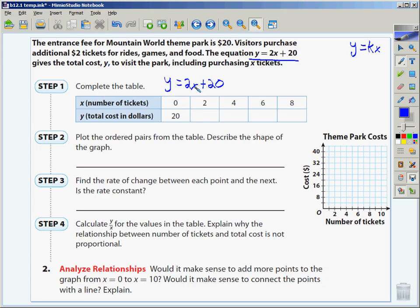So the first thing we're going to do is we're going to complete the table, and they did zero for us. They plugged zero in, they got 20. If I plug 2 in, 2 times 2 is 4, plus 20 is 24. 4 times 2 is 8, plus 20 is 28. 6 times 2? 12. Plus 20? 32. 8 times 2? 16. Plus 20? 36.